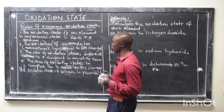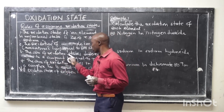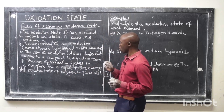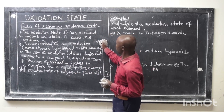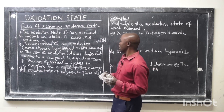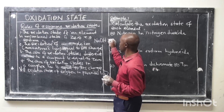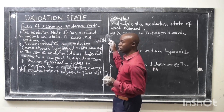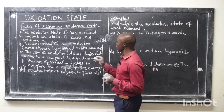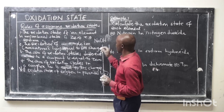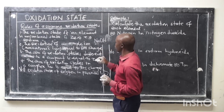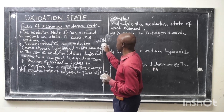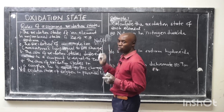The next rule: the sum of oxidation states of different atoms in a compound is equal to zero. For example, in sodium hydroxide (NaOH), the overall charge is zero because the compound is neutral. The oxidation state of sodium is +1 and the oxidation state of hydroxide is −1, so the overall total gives us zero.